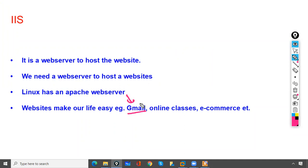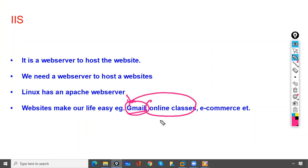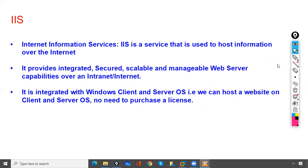Gmail is used for sending emails. If Gmail or any email server is not there, you would need to send mails via post office, which would take a lot of time. Websites make life easy — online classes, e-commerce websites, and so on.